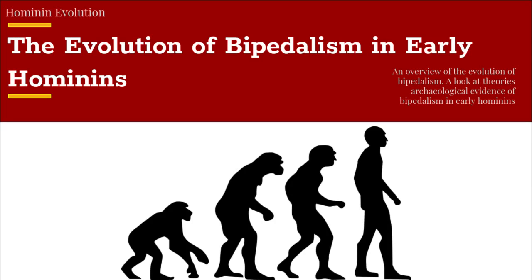Certain groups of hominins would branch off from another. They will either succeed, adapt, or specialize in a certain ecosystem. For example, the Paranthropines — this group of hominins — will adapt but then perish. Evolution is a complex process and doesn't happen in order. You can see this in the modern discovery of Homo naledi, which seems to have more primitive features than other Homo species at the time.